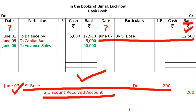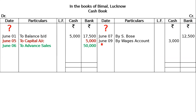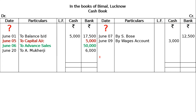Paid wages in cash: wages account debited to cash account. We write wages account debited to cash account on the payment side as a journal entry post. Next, received a cheque from A Mukherjee and deposited it into bank the same day — this will be bank account debited to A Mukherjee, ₹2,000.